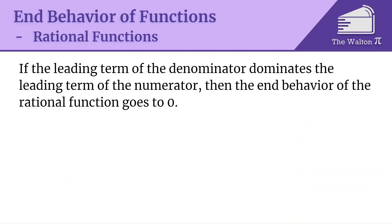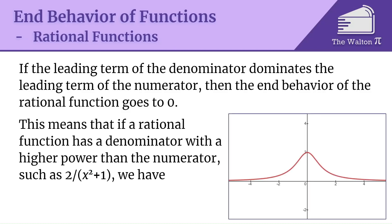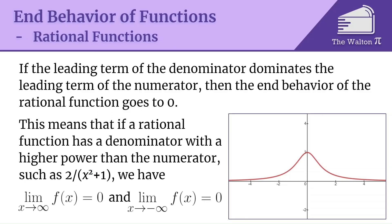If the leading term of the denominator dominates — meaning it has a higher power of x than the numerator — then the end behavior of the rational function goes to 0. For example, 2 / (x² + 1): x² has degree 2 while 2 has degree 0, so the denominator dominates. The limit as x → ∞ is 0 and the limit as x → −∞ is also 0.